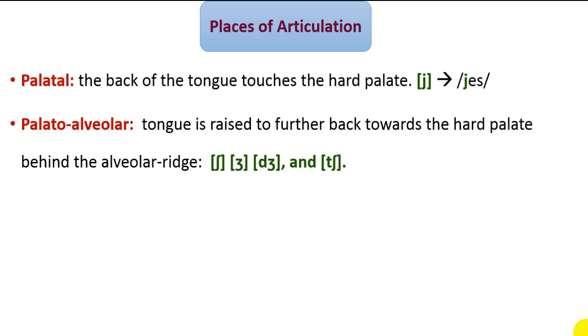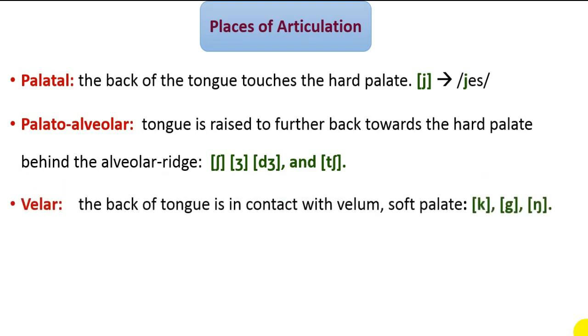Velars: in the production of velar sounds, the back of the tongue touches the soft palate. For example, K and G are velars, as in cat and get respectively.